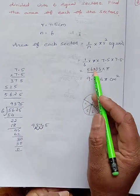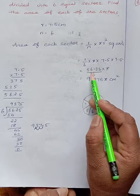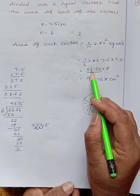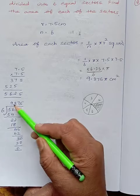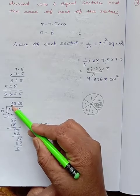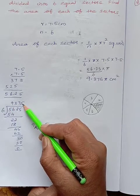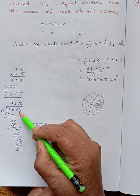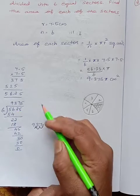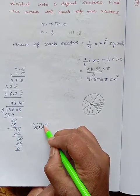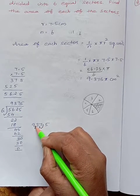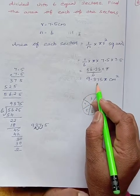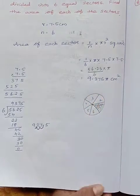No need to bother about the decimal point. Casual division: 5625 divided by 6 gives you 937.5. But already this 5625 is before two decimal places, so we move once again two places. So it will give you 9.375 square centimeters.